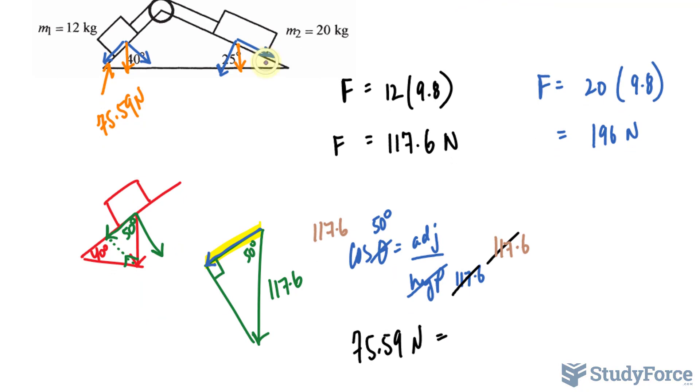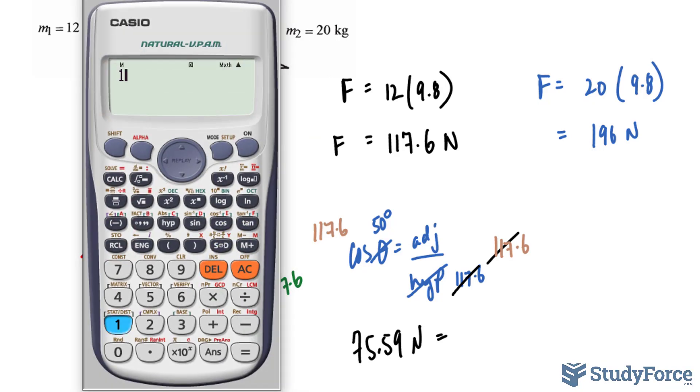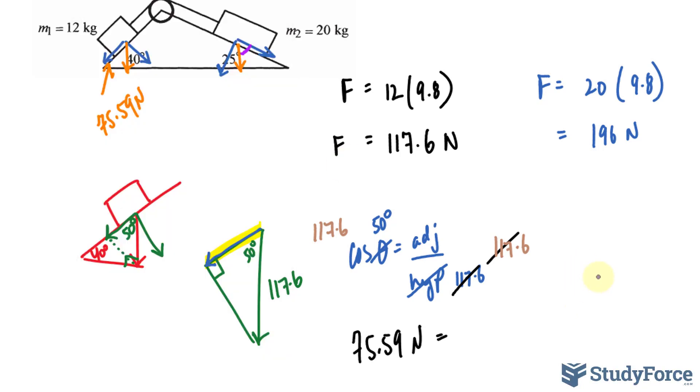So the angle here was 25. 180 minus 90 minus 25 makes 65 degrees. So I'll draw a triangle that represents this part right here. We have, again, that vector going down and a 90 degree angle formed right here. This angle is 65, and this angle is 25.